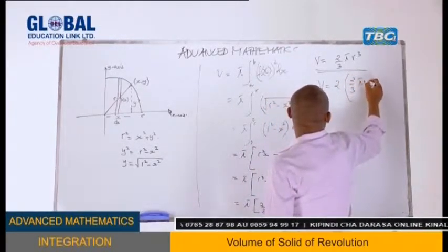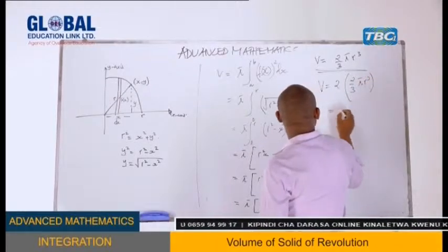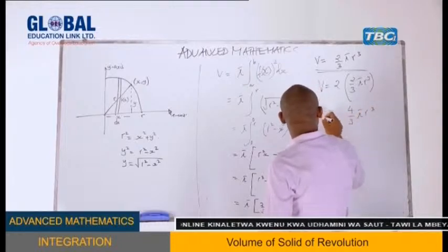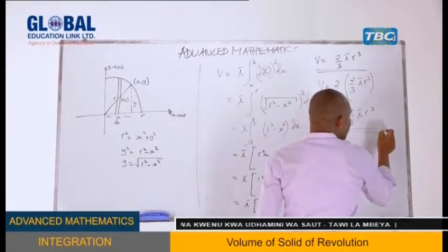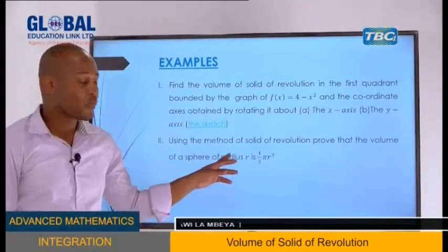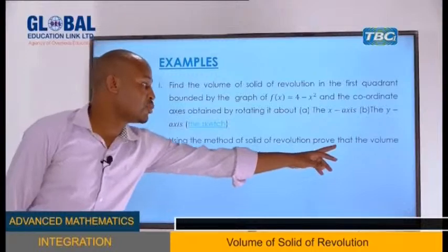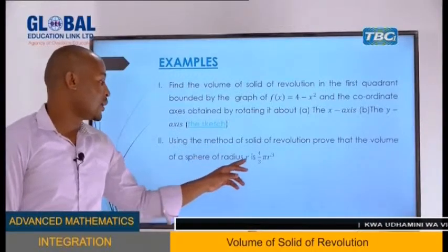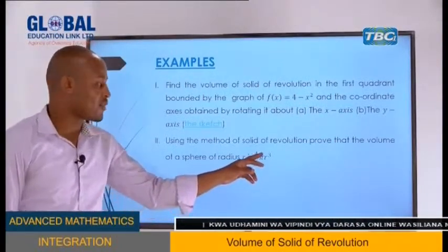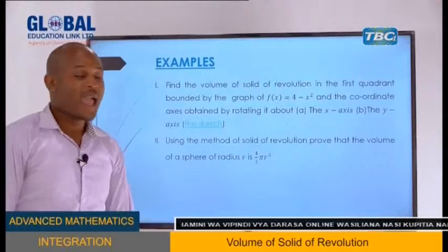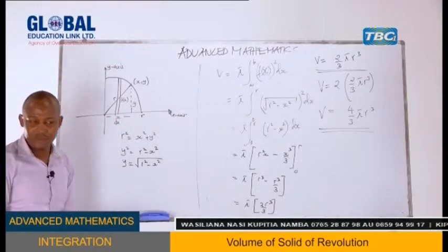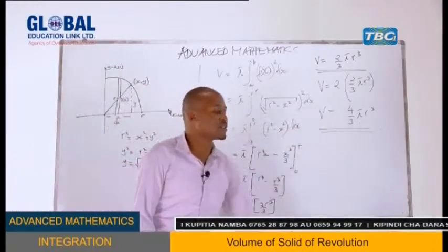Therefore, the volume of the sphere is (4/3)πr³. We have used the solid of revolution method to show that the volume of a sphere of radius r equals (4/3)πr³, as required.